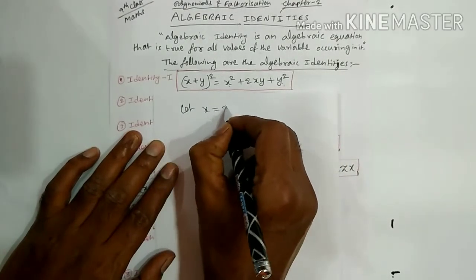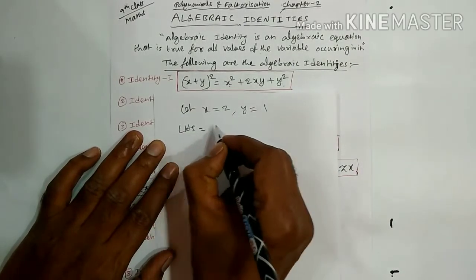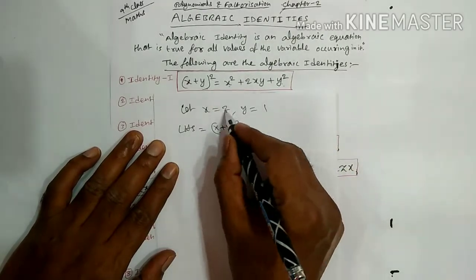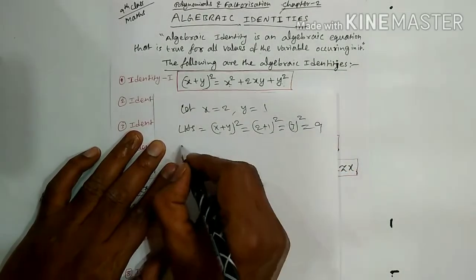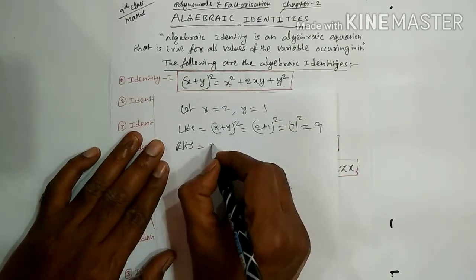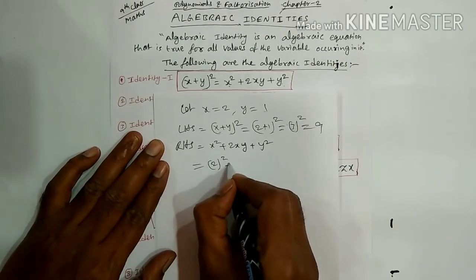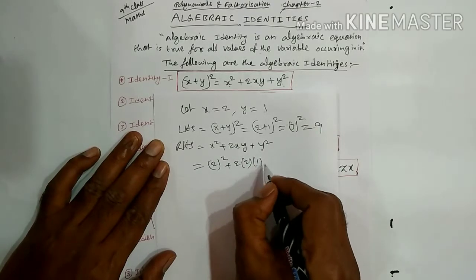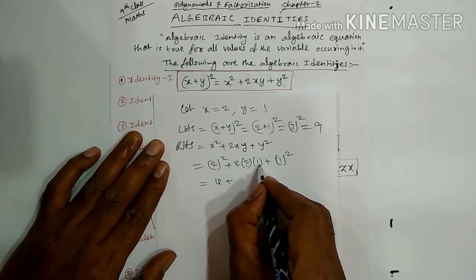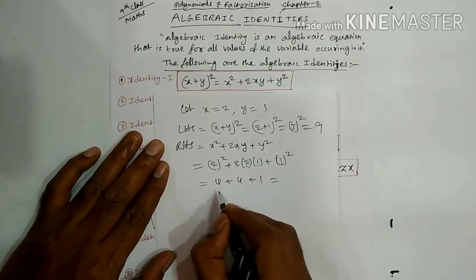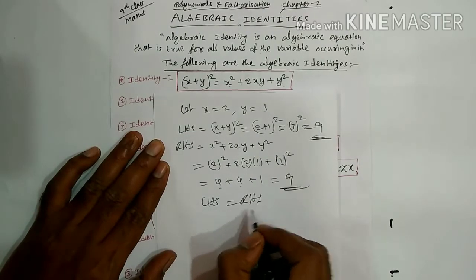Suppose I am taking X equal to 2, Y equal to 1. Substituting in LHS: X plus Y whole square equals 2 plus 1 whole square, which is 3 square, equals 9. For RHS: X square plus 2XY plus Y square equals 2 square plus 2 times 2 times 1 plus 1 square, which is 4 plus 4 plus 1, equals 9.